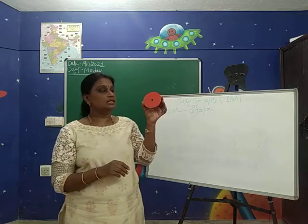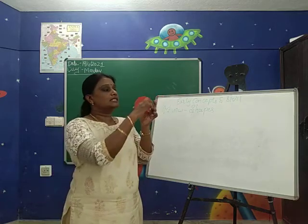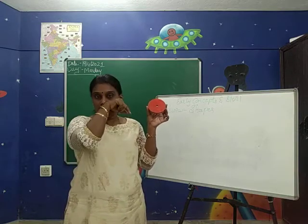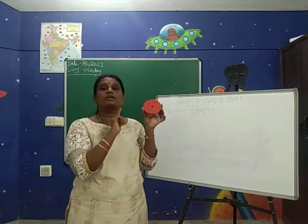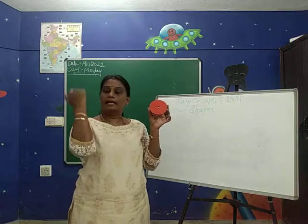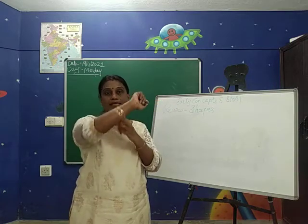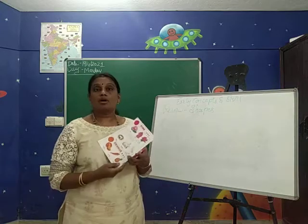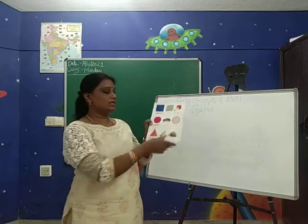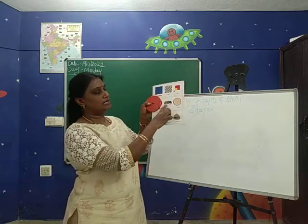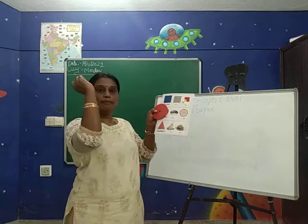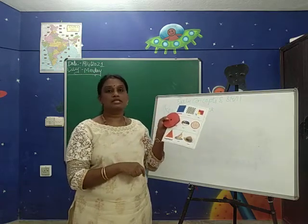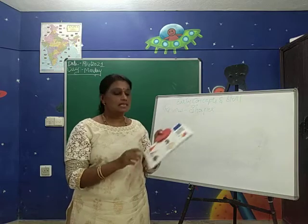So what shape is this, children? This is a circle shape. It is in a round shape. It has no sides, no ends. Circle is in a round shape — it has no sides, no ends. The examples for the circle are bangle, button, coin, clock, and CD. These are the examples for the circle: CD, clock, bangle, button, and ring.